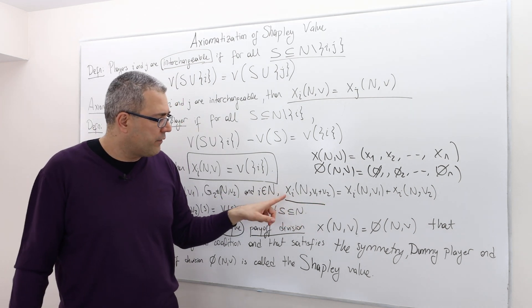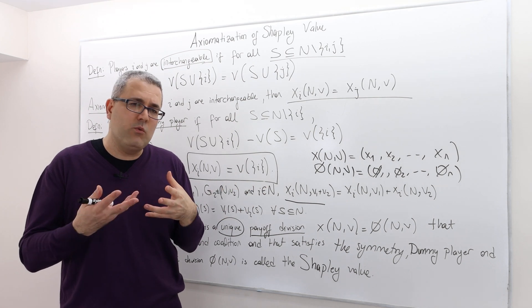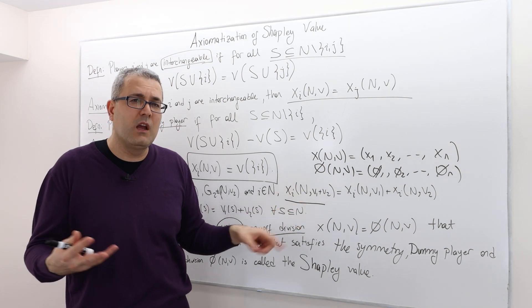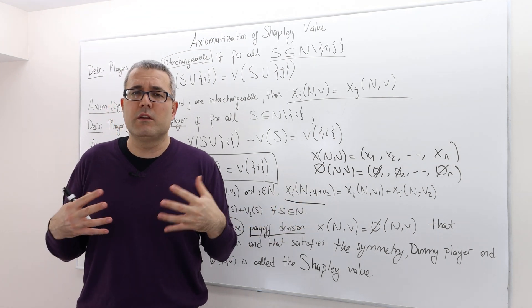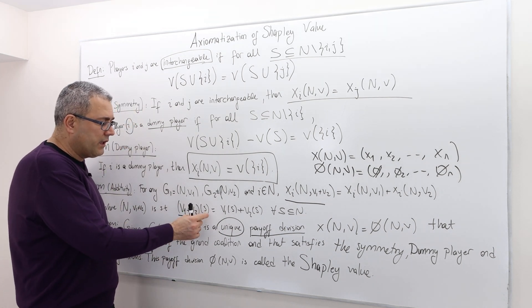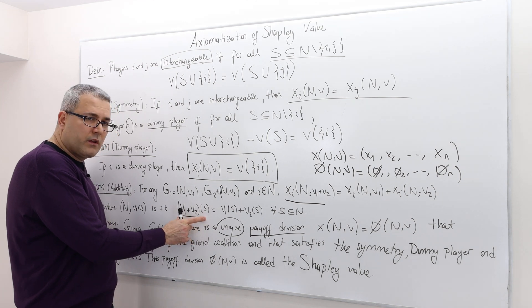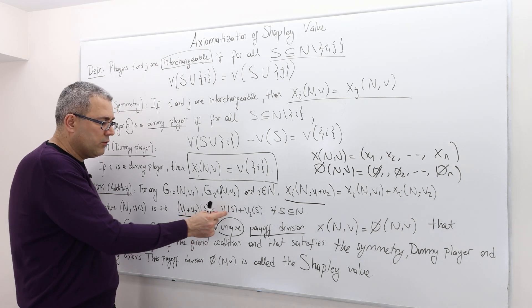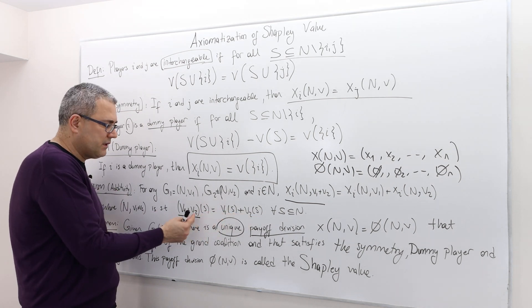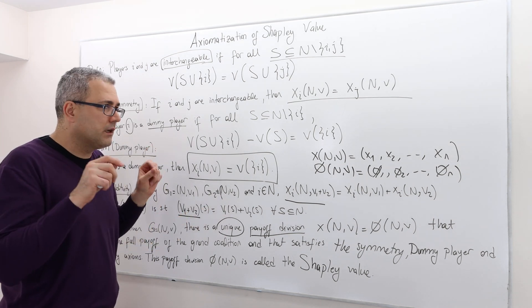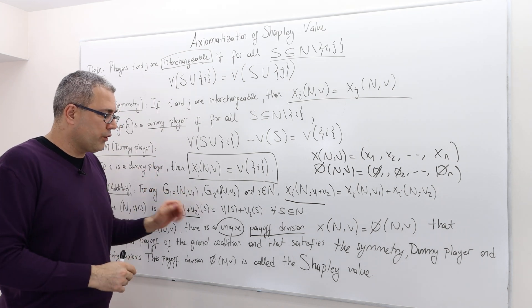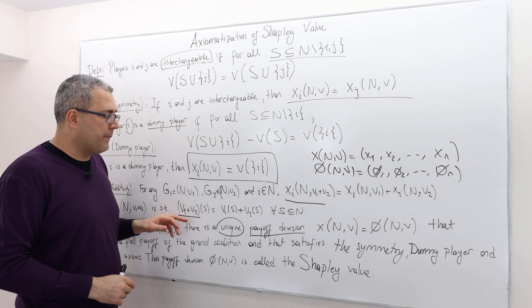And for any player i, the payoff player i is going to get, if we define a new game where the worth function, again, the set of players is n and the worth function is v1 plus v2. What does that mean? In a new game where the worth function is v1 plus v2? Well, if the worth function is v1 plus v2, well, then for any coalition s, the worth of coalition s is going to be worth of coalition s in game 1 plus v2. So it's perfectly edible. You can perfectly add up the worth of each coalition.